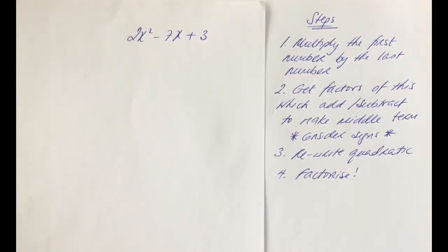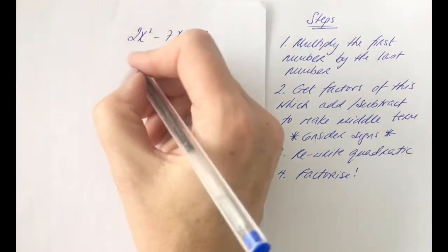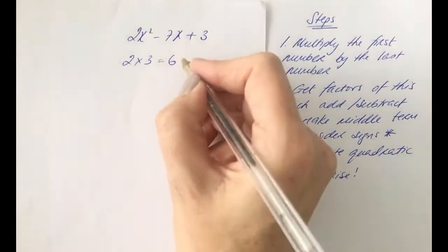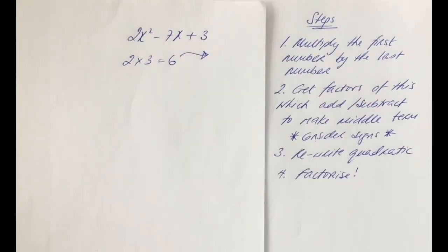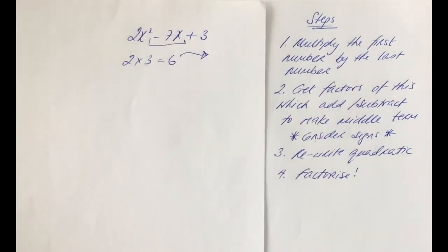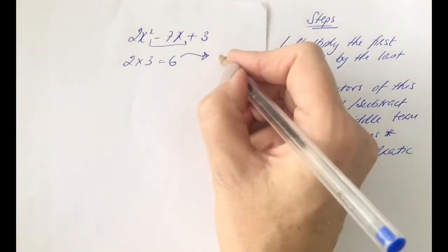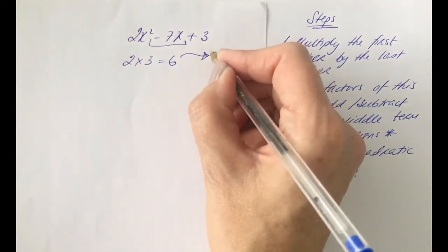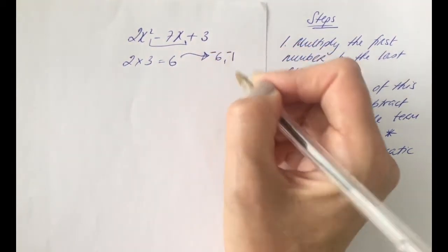So we have 2x squared minus 7x plus 3 here now. Pause the video and work through your four steps and see how you get on with this. So, first step. First number by last number. We're getting a positive 6. Factors of 6 now. In other words, what two numbers will multiply to make positive 6? But we need to add together to make the middle term minus 7. We could have 6 times 1. And 6 and 1 will work. In order, though,